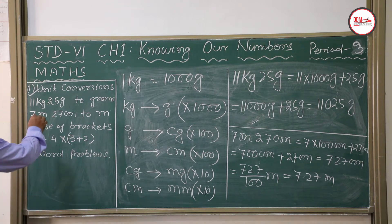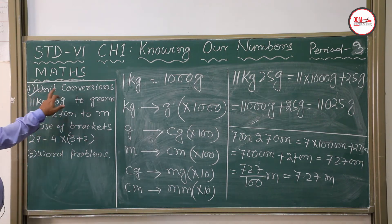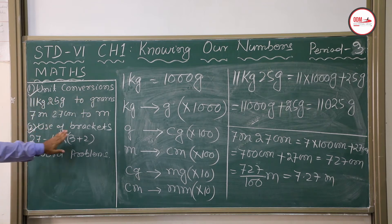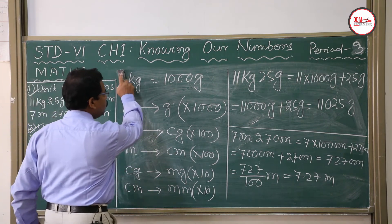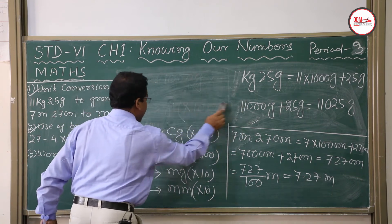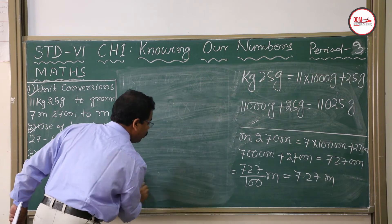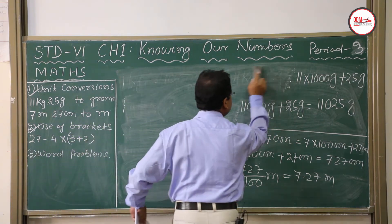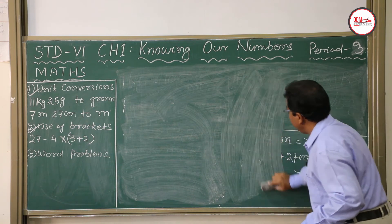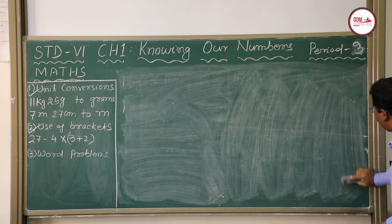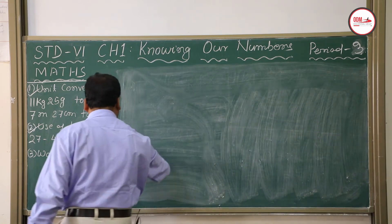Unit conversions are over. Now we discuss use of brackets. Whenever you do any calculation, give priority to brackets first. You must know BODMAS rule: B = Bracket, O = Of, D = Division, M = Multiplication, A = Addition, S = Subtraction.